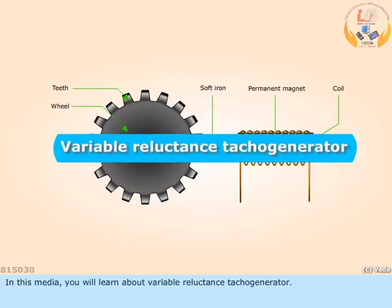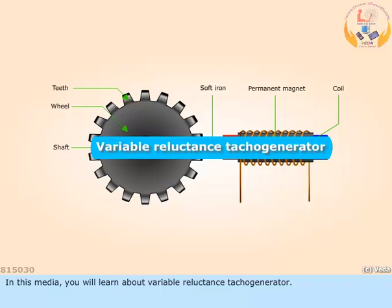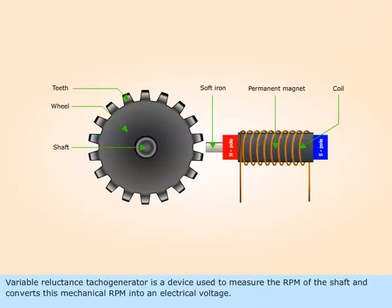In this media, you will learn about Variable Reluctance Tachogenerator. Variable Reluctance Tachogenerator is a device used to measure the RPM of the shaft and converts its mechanical RPM into an electrical voltage.